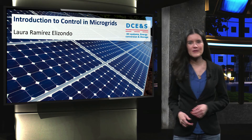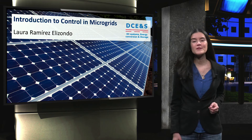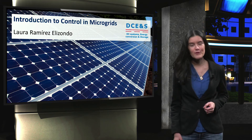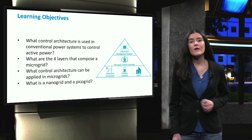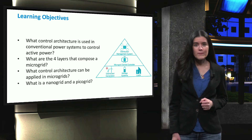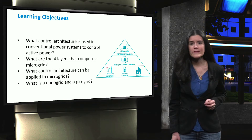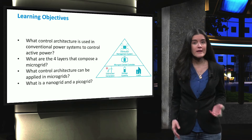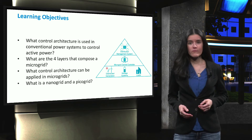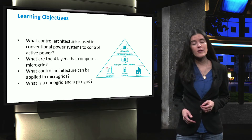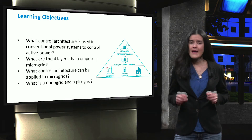Welcome to the fourth week of the course Integration of Photovoltaic Systems in Microgrids. During the coming two weeks, we will cover the topic of control in microgrids. During this week, we are going to first focus on reviewing important aspects about control in traditional power systems. We will also introduce the structure layer and control layer of a microgrid. This particular week, we will focus on the lowest layer of control, the microgrid local control.